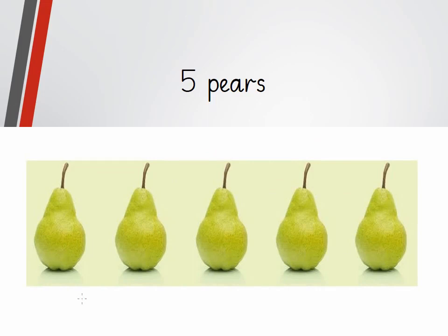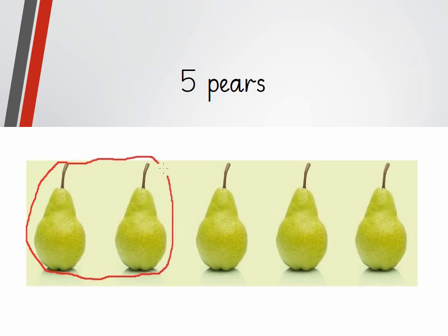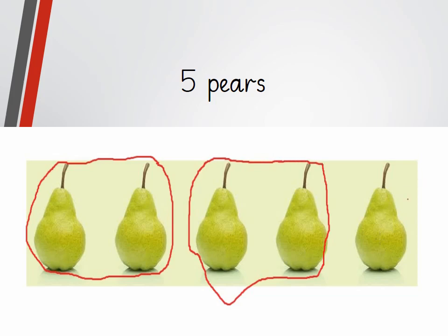How many pairs can you see? Good — five pairs. So let's divide them into pairs, sets of twos, and check whether five is an even or odd number. We will make pair one, and this is pair two. One pair is left over. It means five is an odd number.